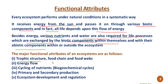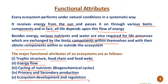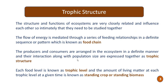These functional attributes are described as follows: first, trophic structure, food chain and food webs; then energy flow in the ecosystem; then cycling of nutrients, that is biogeochemical cycles; then primary and secondary production of the ecosystem; and ecosystem development and regulation.